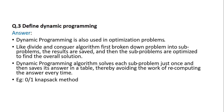In dynamic programming, we first break down the problem into sub-problems, the results are saved, and then sub-problems are optimized to find the overall solution. A dynamic programming algorithm solves each sub-problem only once and then saves its answer in a table, thereby avoiding the work of recomputing the answer. An example of this is the 0-1 Knapsack matrix chain problem.